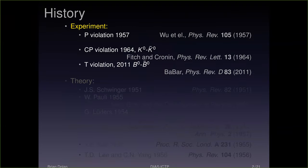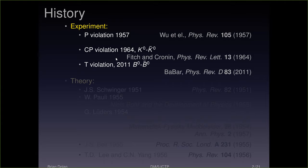In terms of the timescale, P-violation was discovered in 1957, and it was only a few years later that CP violation was discovered in the neutral kaon system. Since CPT is a symmetry, CP violation implies T-violation. But T-violation wasn't discovered definitively until nearly 50 years later by the BaBar collaboration in neutral B-meson systems.